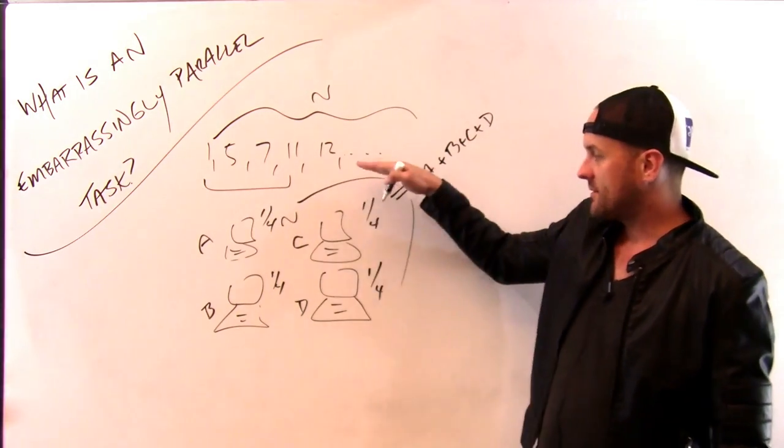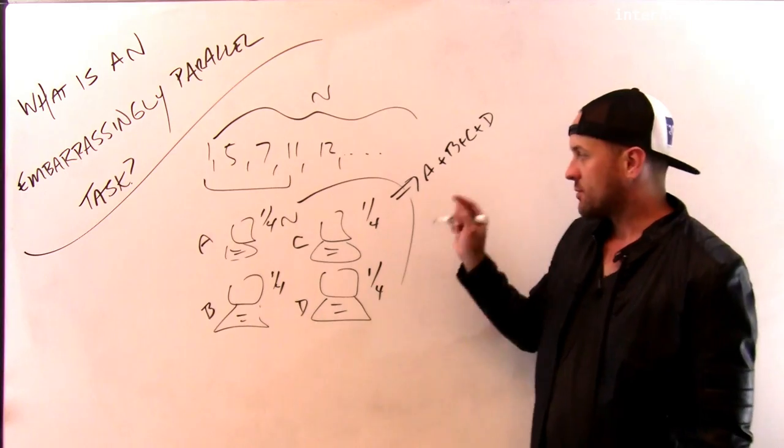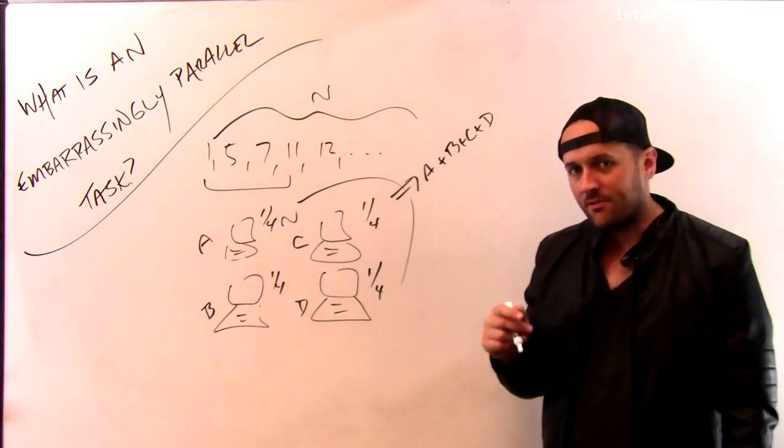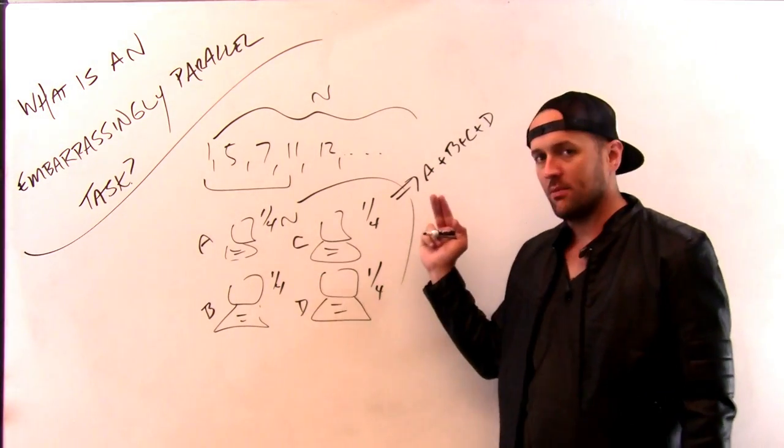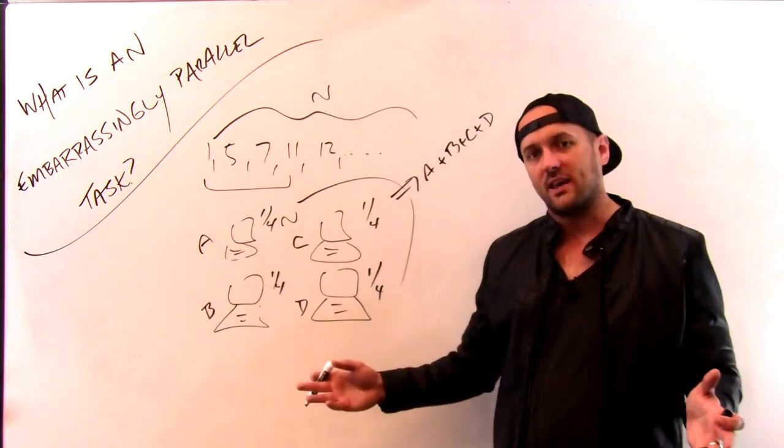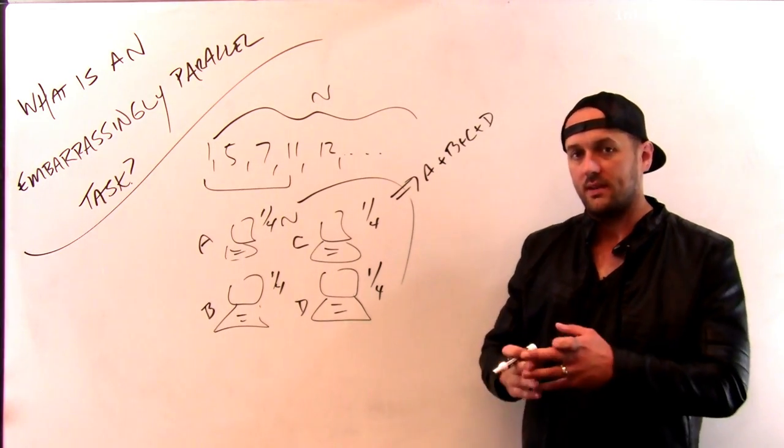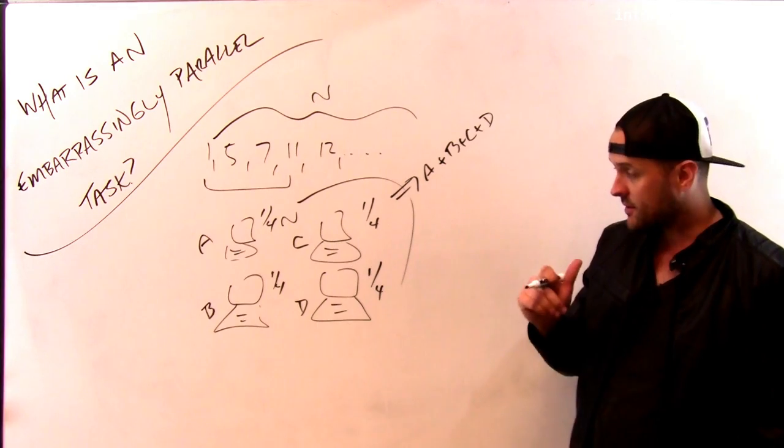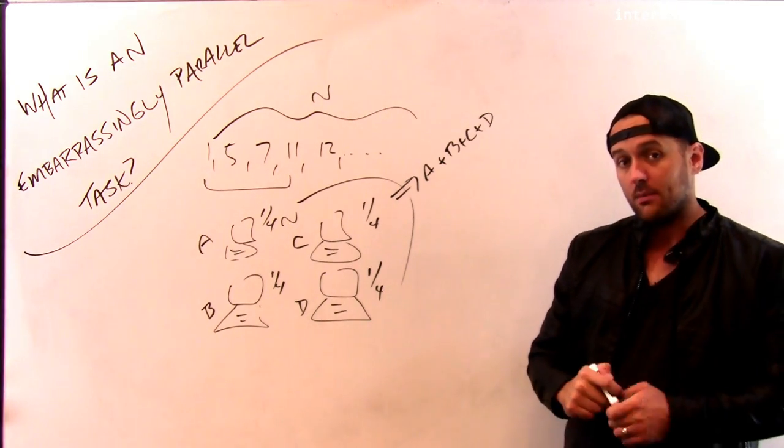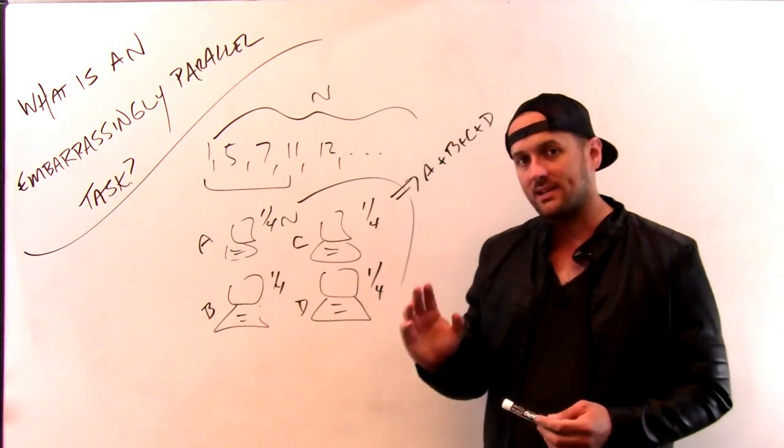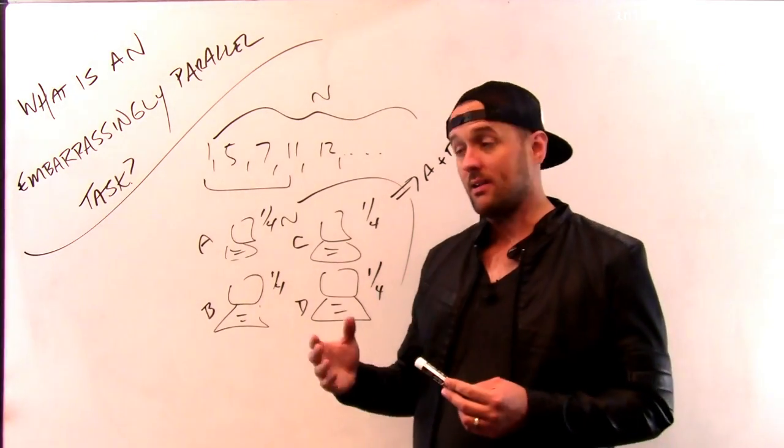The other thing that's really nice about this problem is that the result is much smaller than the inputs. So I might have given this machine a quarter million numbers to add up, and the result is a single number. So it's very fast for it to communicate that result back to me. And then I just add up all the results from the different computers that I assigned these different tasks to. So those are characteristics of the problem that are part of what makes a particular task embarrassingly parallel.